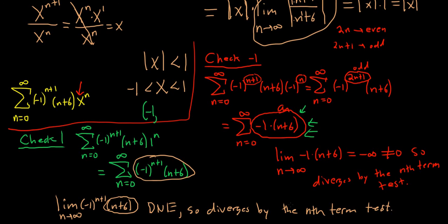Because it diverges, we use a parenthesis on the 1 as well. If it converged, we would use a bracket. And so that is the interval of convergence — the final answer is negative 1 to 1, open interval. It's always important to check the endpoints in these problems. The only time you don't have to check endpoints is if you use the geometric series test, which you usually can't use. Most of the time it's the ratio test, then you go through and check the endpoints. Hopefully this video has been helpful. Good luck.